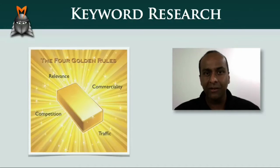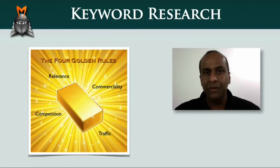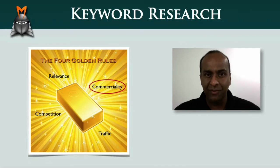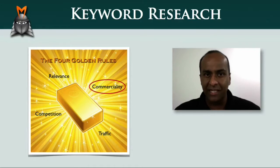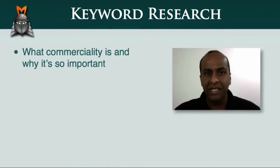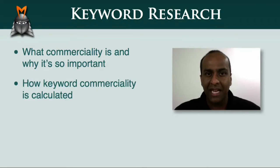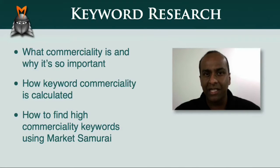In this video, we'll be taking a look at the fourth golden rule of keyword research, which is commerciality. If you happen to break this rule, you run the risk of missing out on the most profitable keywords in your niche. Specifically, we'll be covering what commerciality is and why it's so important, how keyword commerciality is calculated, and how to find high-commerciality keywords using Market Samurai.